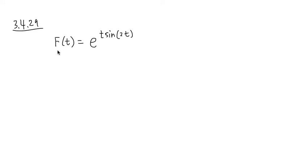3.4 number 29, we are going to differentiate e to the t times sine of 2t. Notice that this part is in the exponent.